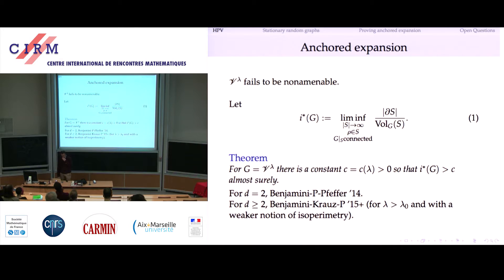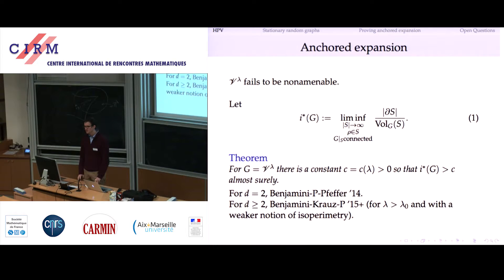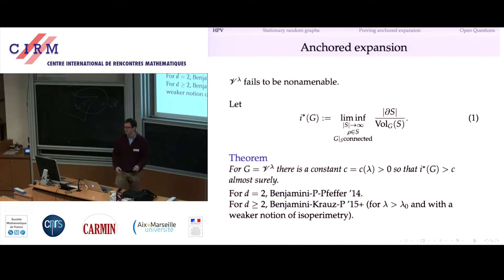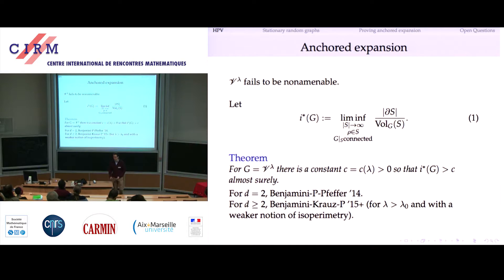I would like to share a little bit of how to prove this. Lambda is supposed to be sufficiently large — the technical problem is that if you think of it like a percolation problem, you get bigger and bigger wide open spaces when lambda goes to zero, and you have less control. But I think it's just a technical problem. I would like to remove the condition that lambda is sufficiently large — I don't think it's necessary, but the proof currently only works for large lambda.